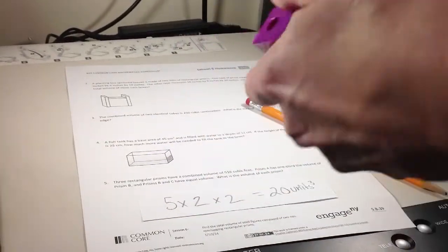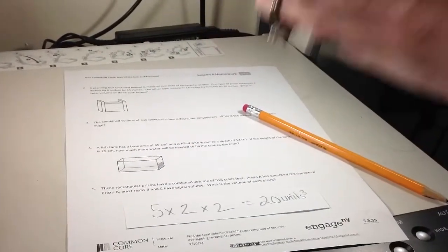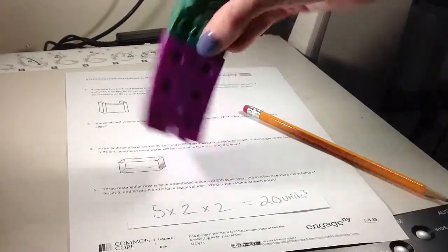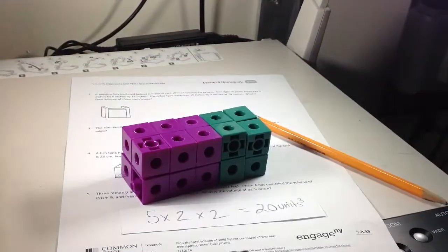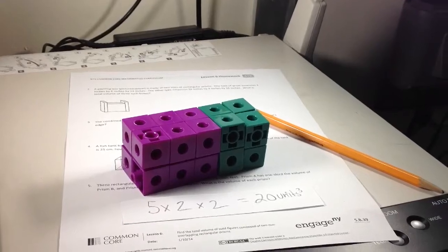And it doesn't matter which way I put them together. I can put them together like that, I can put them together like this, I can put them together like that. But because the number of cubes is the same, I will always get 20 units cubed.